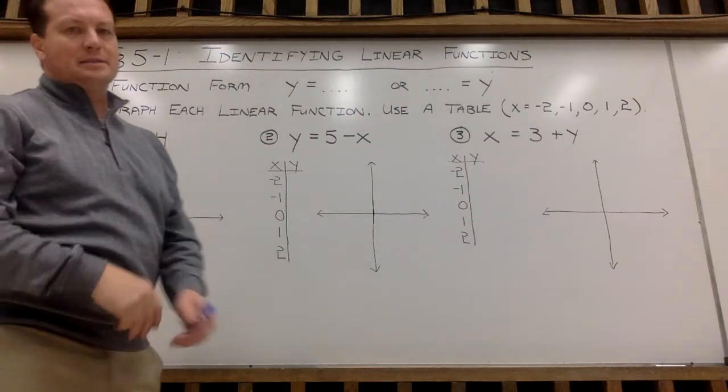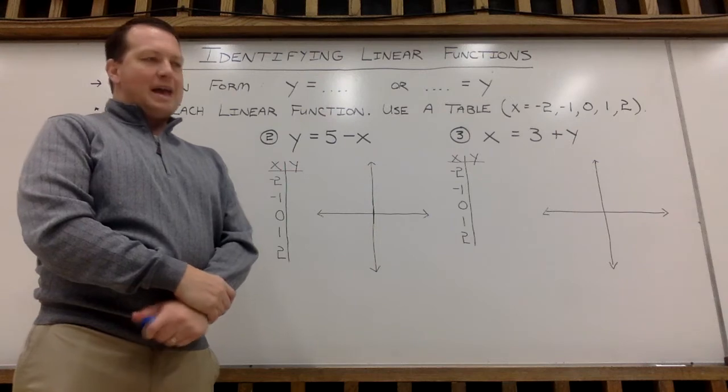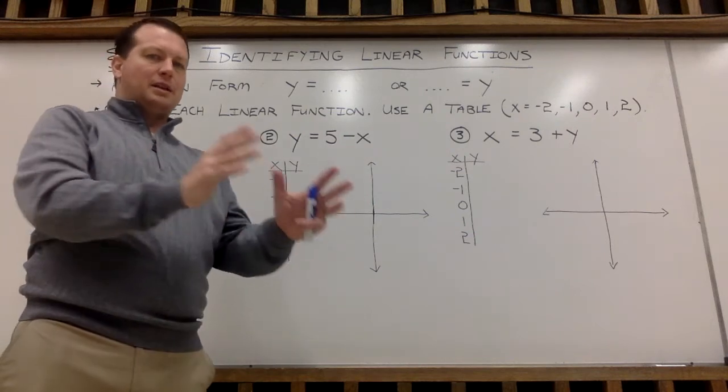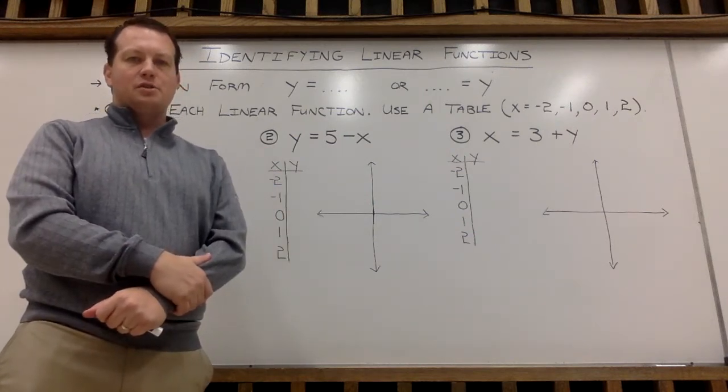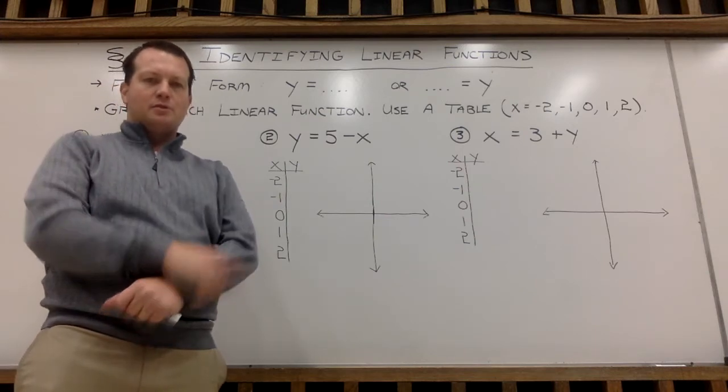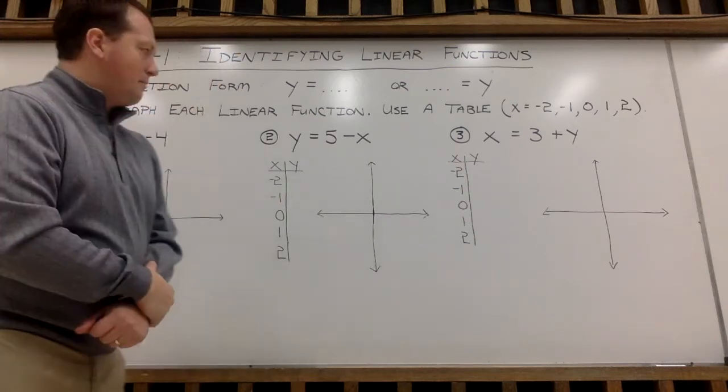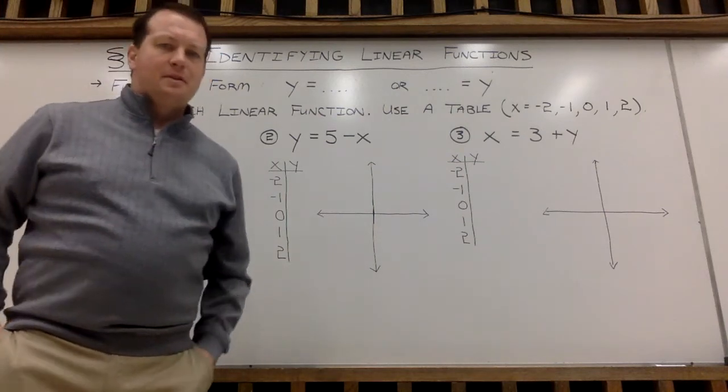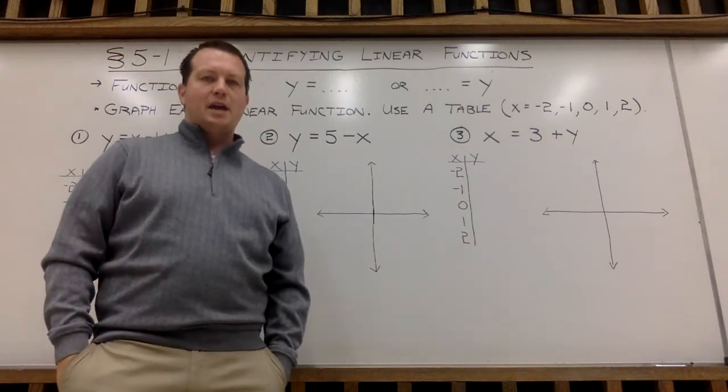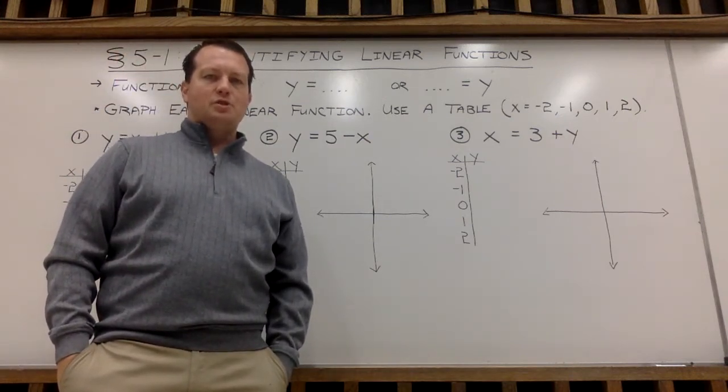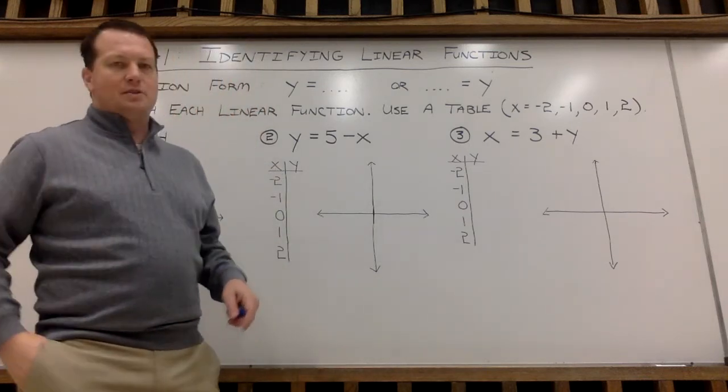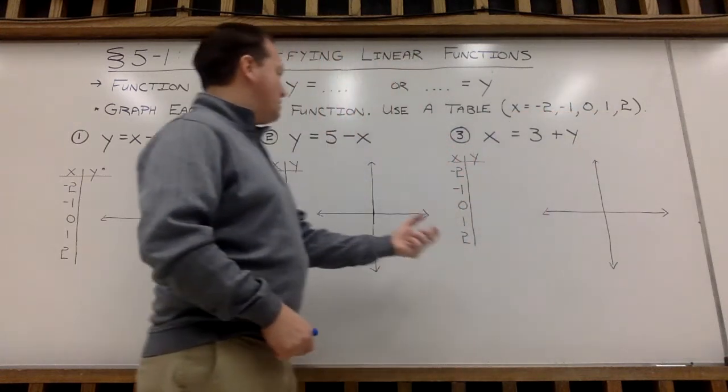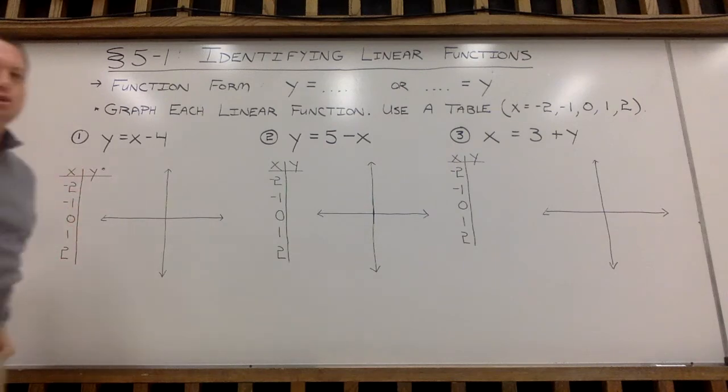We're going to take a starting stance here at looking at linear functions. Now the word linear means root word line. So we are going to be looking at graphing functions today that are lines, straight lines. Up, down, left, right, side to side. And our graphing method today, if you remember back chapter 1 section 8, we did a little bit of graphing functions using a table of values. So that's what we're going to do today. We're going to be plugging in x values of negative 2, negative 1, 0, 1, and 2, as we did way back at the end of chapter 1.